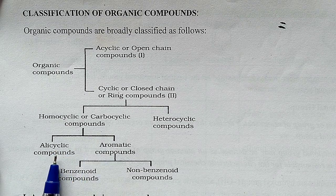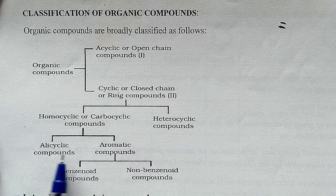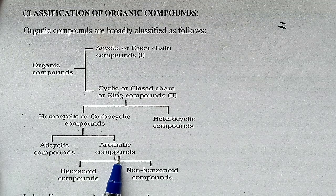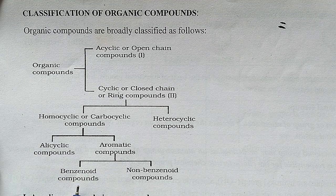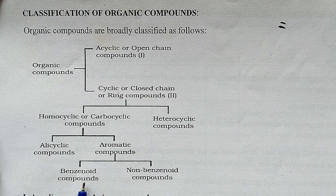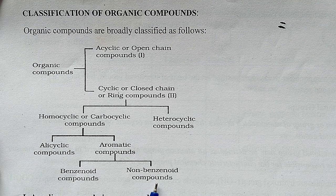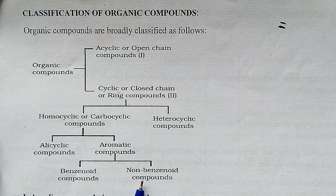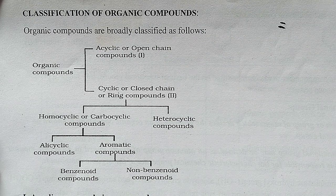Under homocyclic or carbocyclic compounds, you can have two types: alicyclic compounds and aromatic compounds. Further, aromatic compounds are classified into benzenoid compounds and non-benzenoid compounds. Benzenoid means the compound contains at least one benzene-type ring. Non-benzenoid means these are definitely aromatic but do not contain a benzene-type ring. We will discuss this classification in detail.